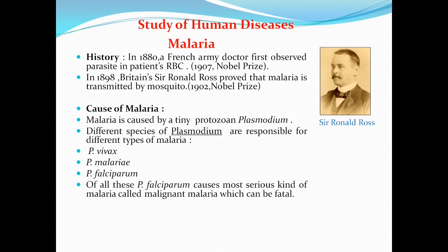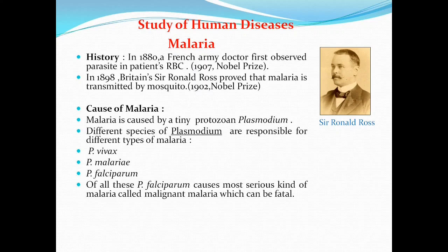Let us study some of the human diseases. First one is Malaria. Let us first discuss the history of malaria. In 1880, a French army doctor first observed the parasite in patients' RBCs, and for this work he got the Nobel Prize in 1907. Then in 1898, Britain's Sir Ronald Ross proved that malaria is transmitted by mosquitoes, and for his discovery he got the Nobel Prize in 1902.